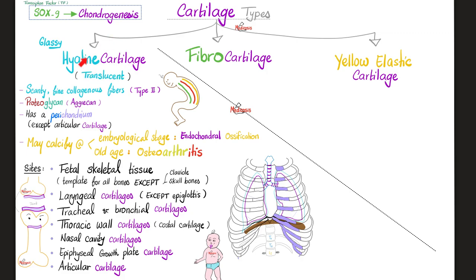Normally, cartilage should not calcify. If they calcify, maybe you're an embryo growing via endochondral ossification. Or it's old age — osteoarthritis — the degenerative joint disease where you have death of cartilage.